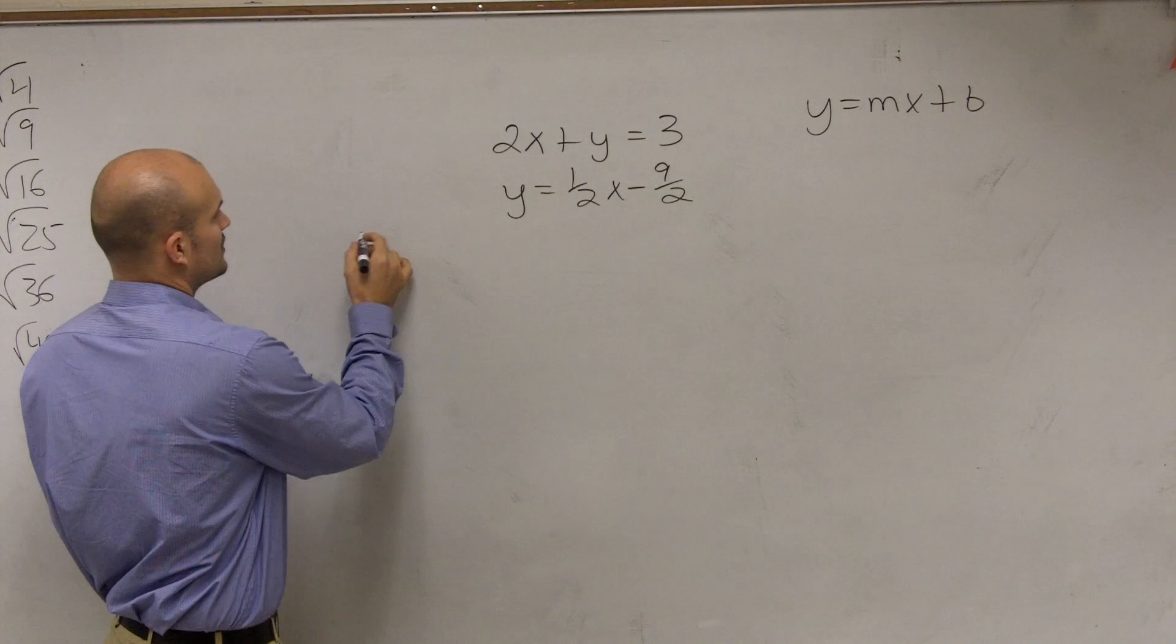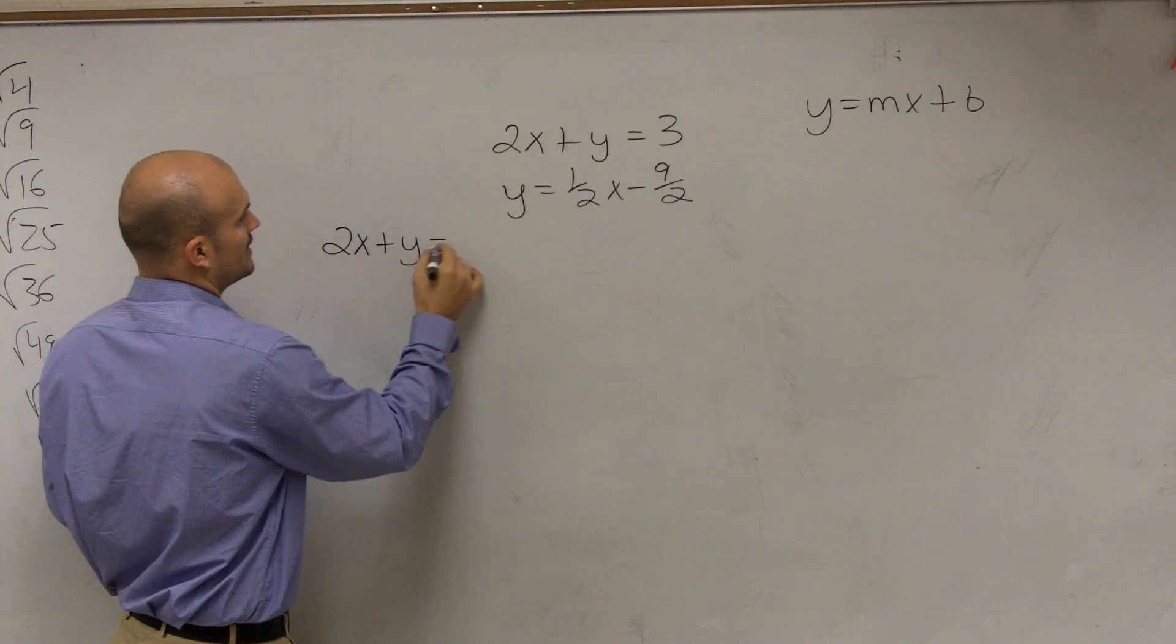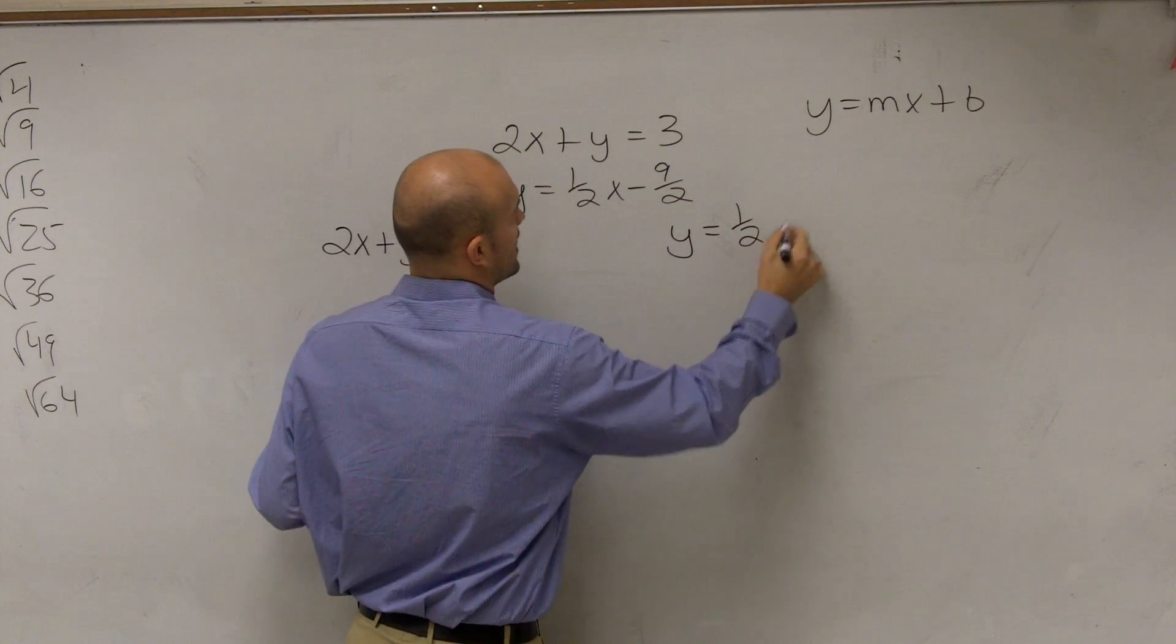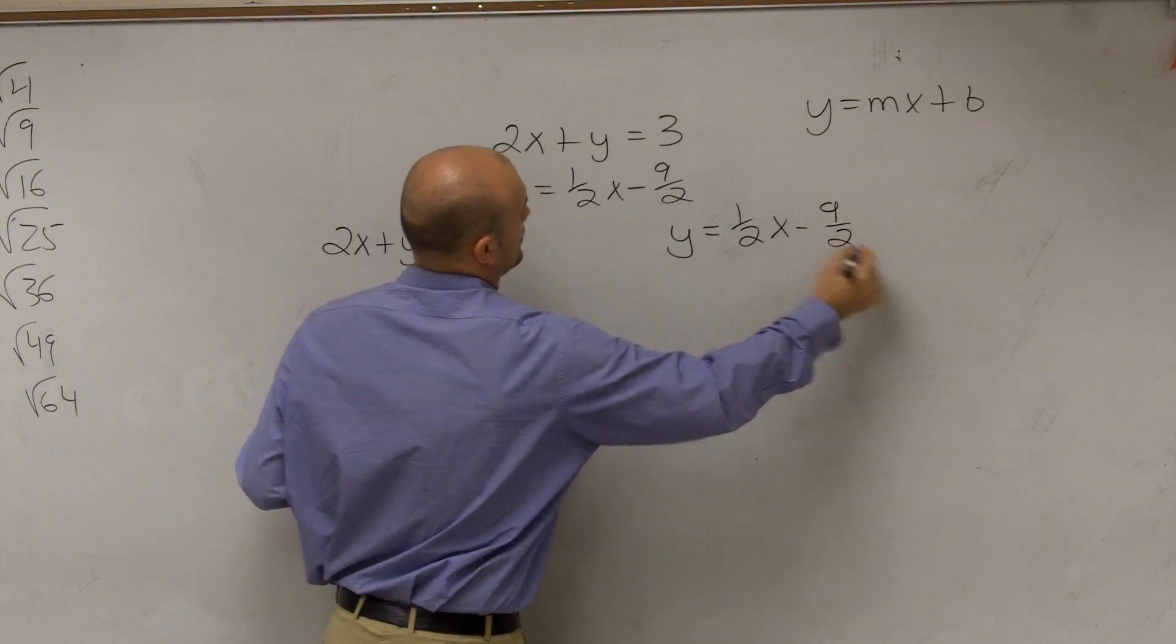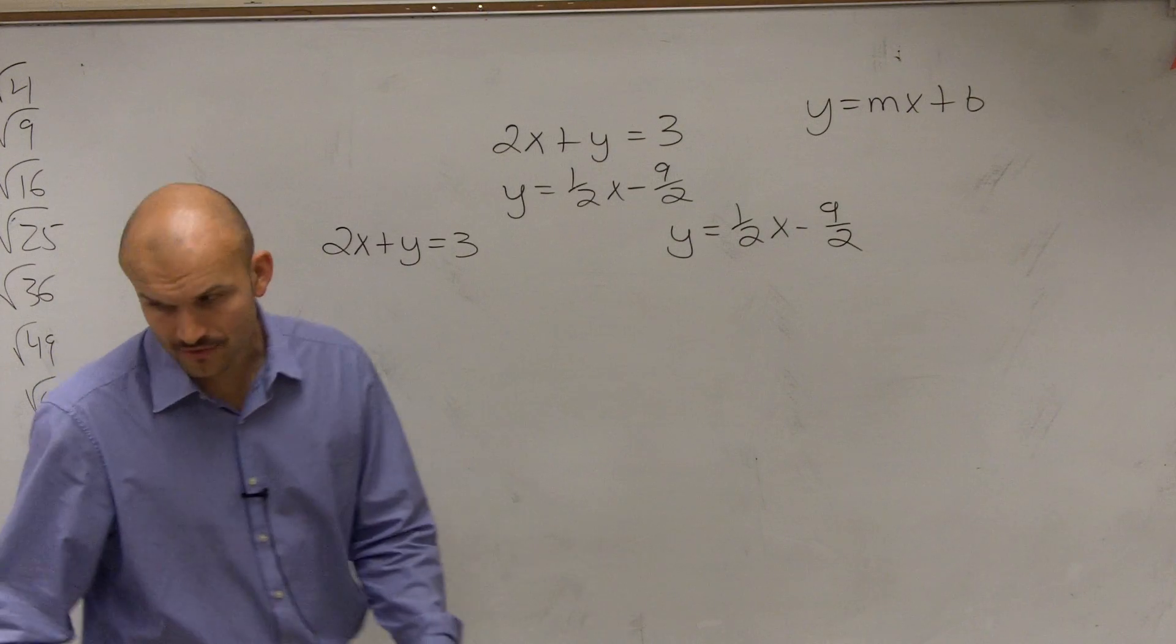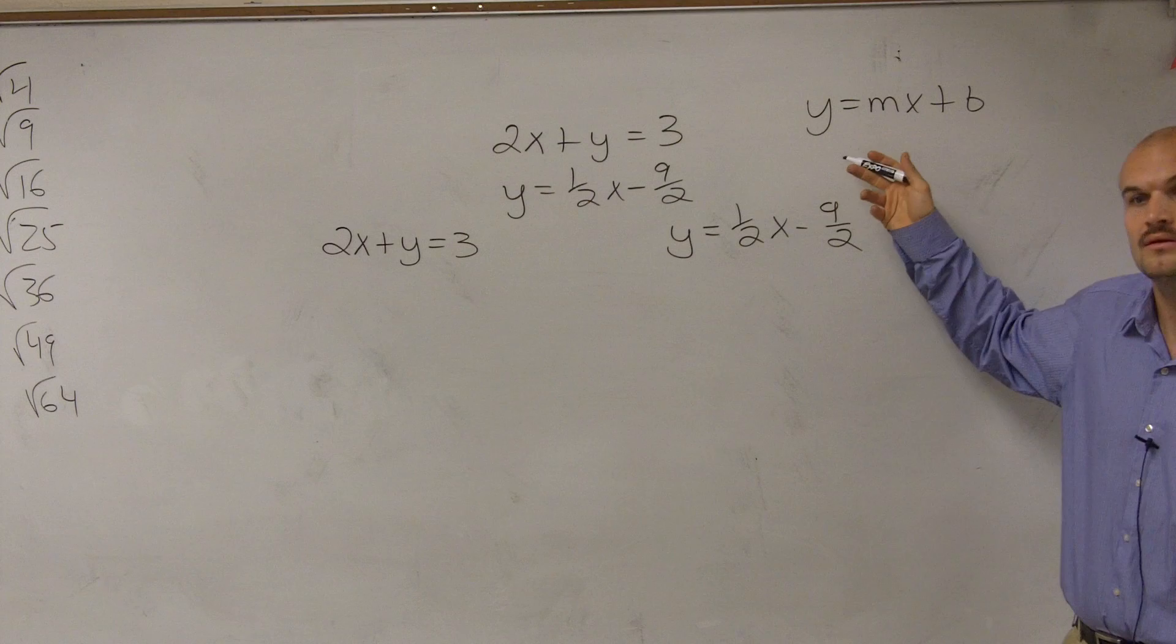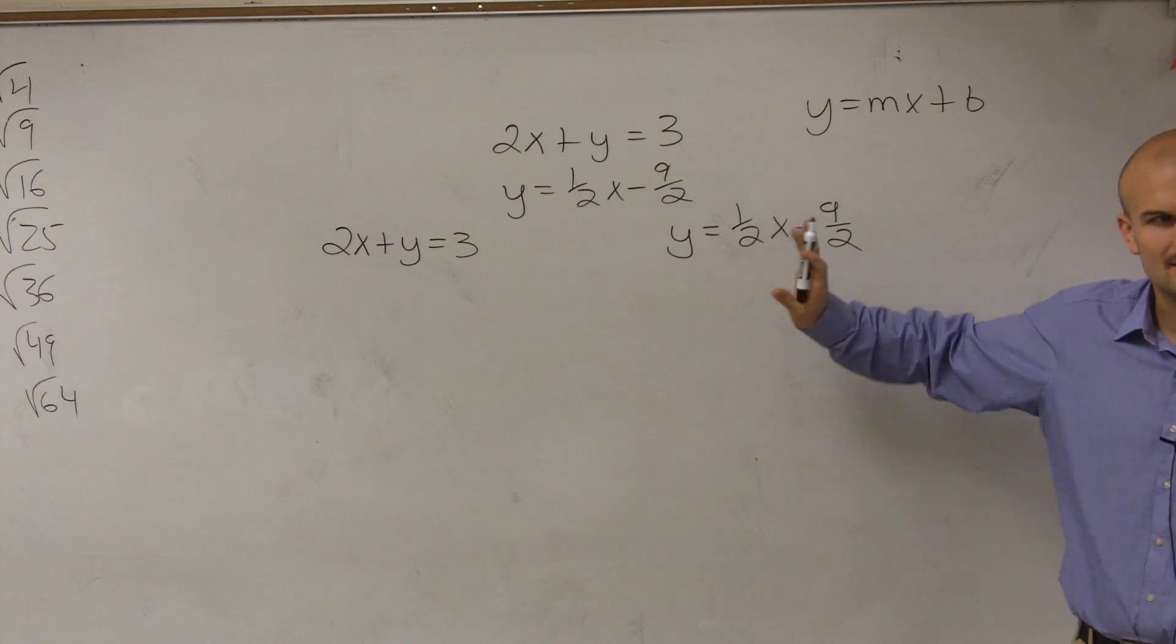So that's the first thing you're going to do. First equation is 2x + y = 3, and your second equation is y = 1/2x - 9/2. Now, is this already in that format? Yeah, it is. So do we have to do anything? No.